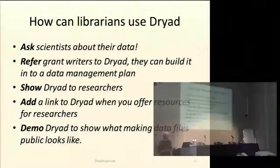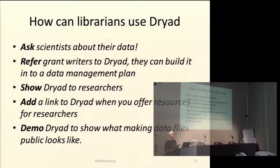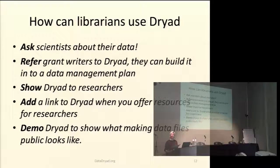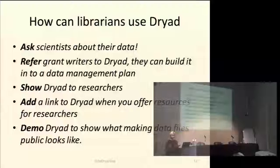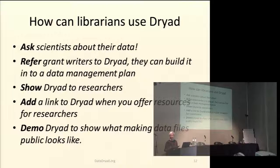We think younger scientists can gain additional visibility for their work by making data files available and citable — for example, by adding a section to their CVs for data publications. Another scenario is when a research team decides to archive all of its data in Dryad at once. We had one case where over a weekend one author archived 17 data files associated with 17 articles — the work of a multinational team who had been working for many years on tuna kits, small sponge-like animals. They decided: let's put all the data in Dryad so when anyone asks, we can simply point them there.